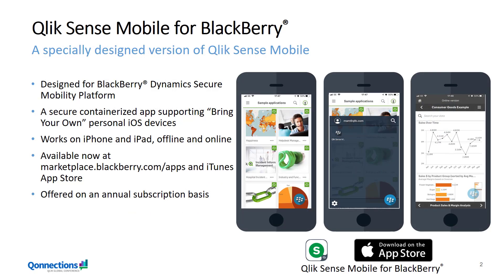Qlik Sense Mobile for BlackBerry is all about bring your own device. It works on iPhone and iPad in both online and offline mode. If you're online and okay using a browser, Qlik Sense Enterprise is certified on BlackBerry Access browser, but an app provides a far more streamlined and efficient user experience — and for offline reporting and analysis, Qlik Sense Mobile for BlackBerry supports that as well. It was released around the end of May, available now on the BlackBerry Marketplace, and works on any Qlik Sense Enterprise environment greater than November 2018 Service Release 3, and BlackBerry UEM from version 12.9.